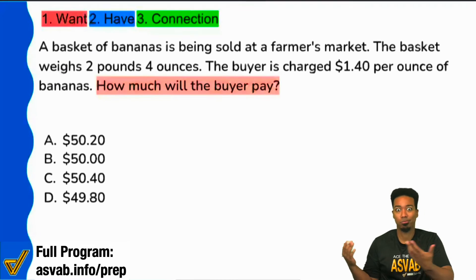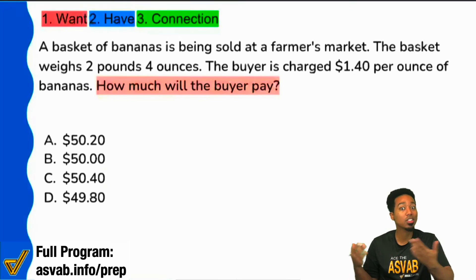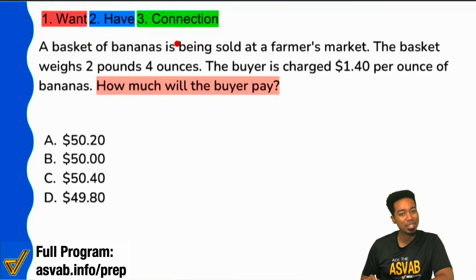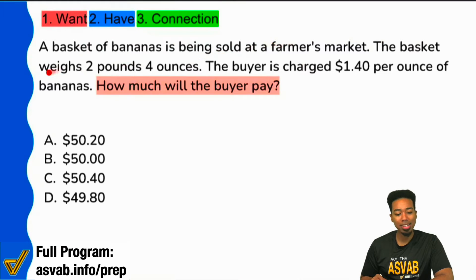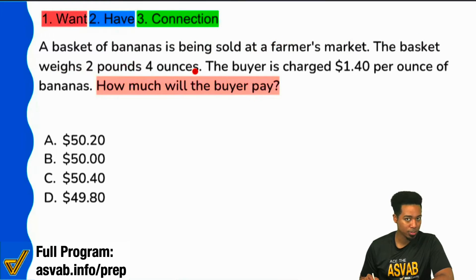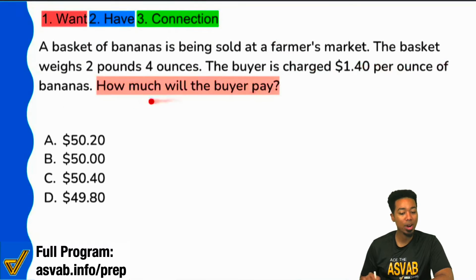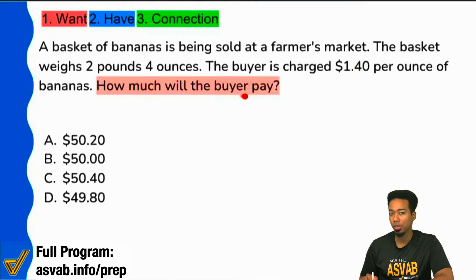Let's figure out what we're buying and how much it costs. A basket of bananas is being sold at a farmers market. The basket weighs two pounds four ounces. The buyer is charged one dollar and forty cents per ounce of bananas. How much will the buyer pay?